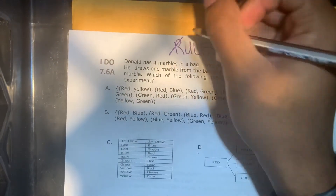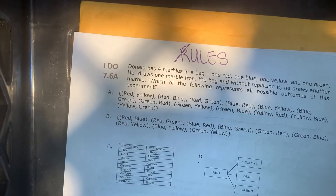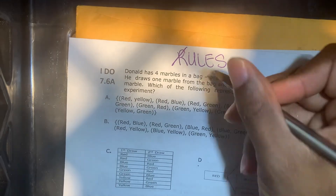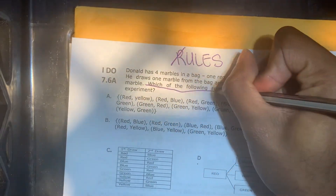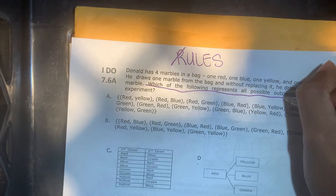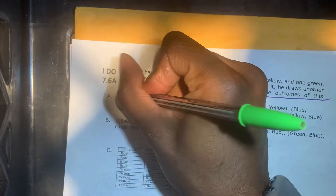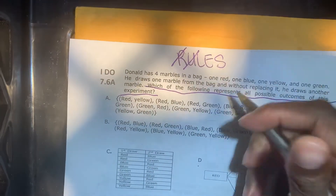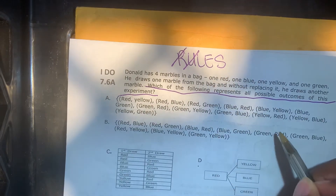So we read all of the word problem, including the answer options and the specific question. Now we're going to underline the specific question: which of the following represents all possible outcomes of this experiment?